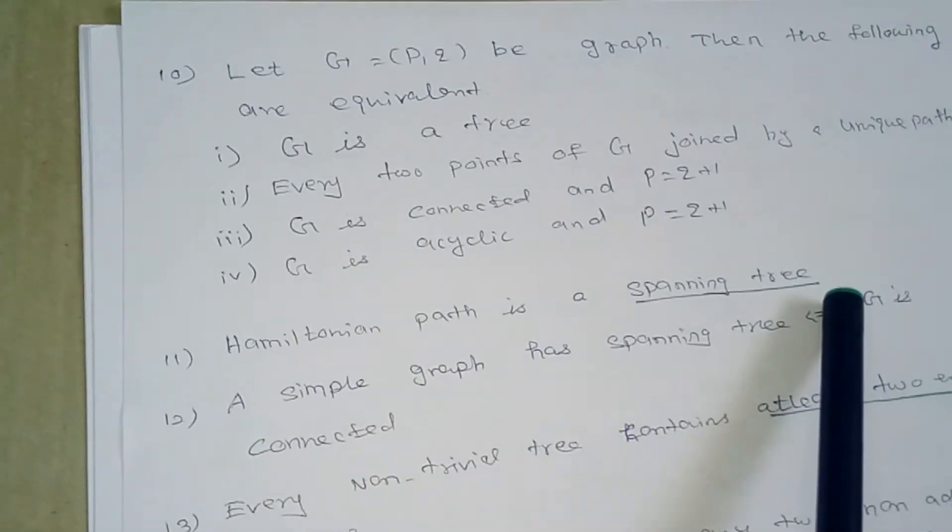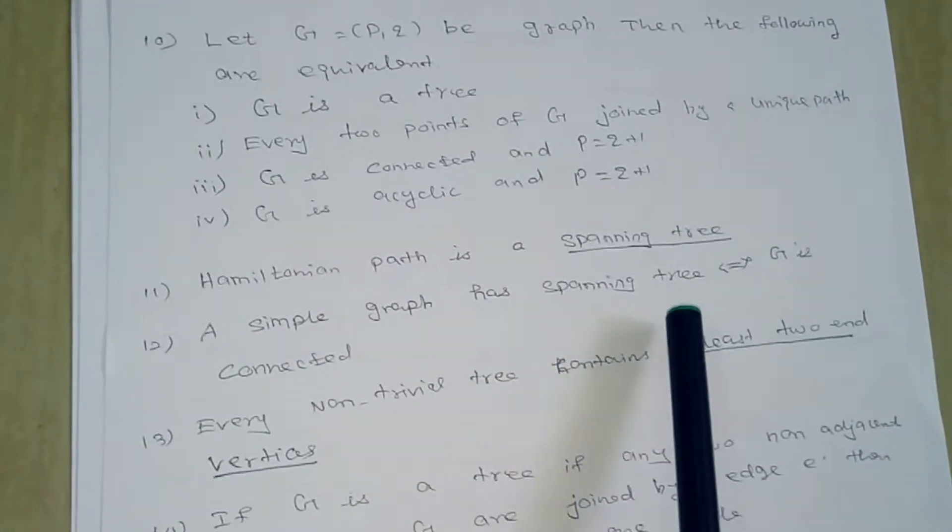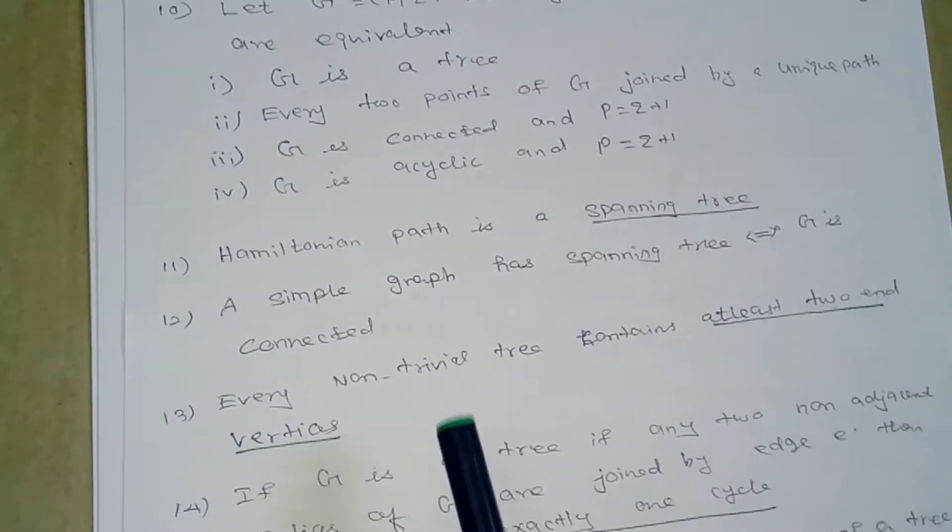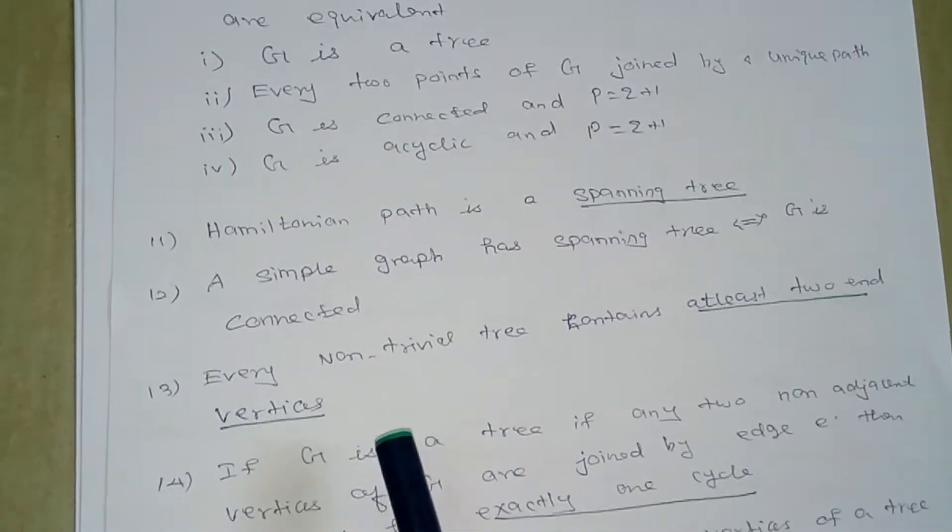A Hamiltonian path is a spanning tree. A simple graph has a spanning tree if and only if G is connected. A non-trivial tree contains at least two end vertices.